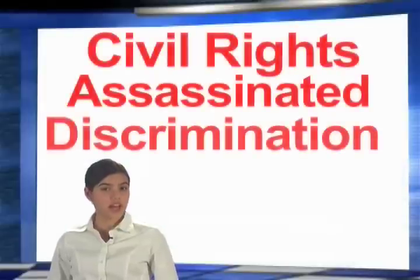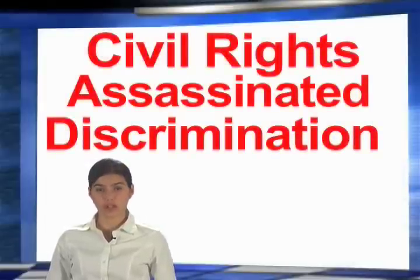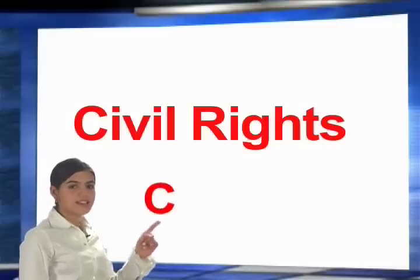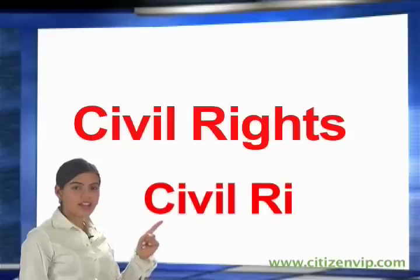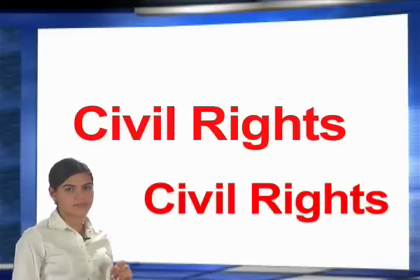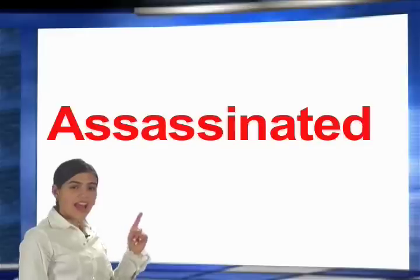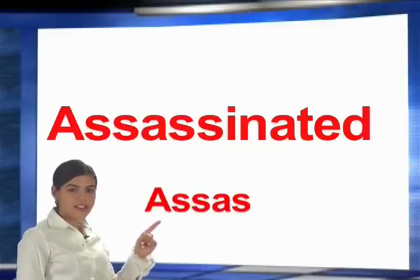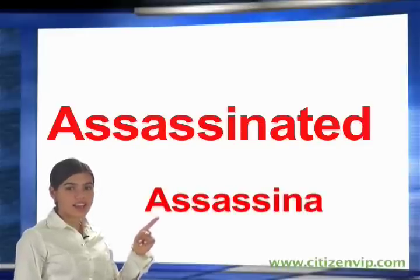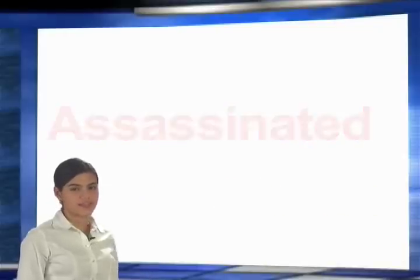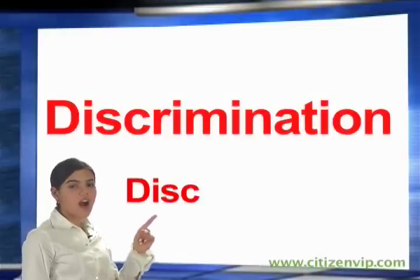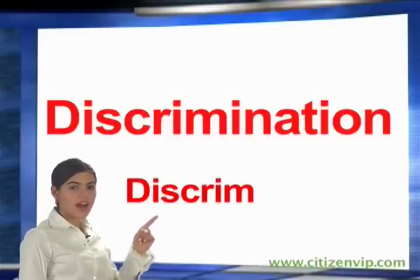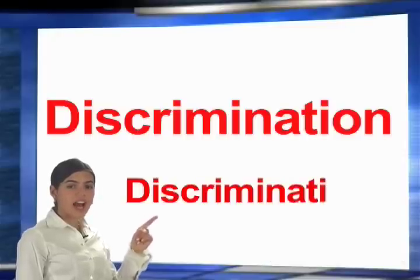Let's get familiar and learn how to spell the following words. Civil rights: C-I-V-I-L, Rights: R-I-G-H-T-S. Assassinated: A-S-S-A-S-S-I-N-A-T-E-D. Discrimination: D-I-S-C-R-I-M-I-N-A-T-I-O-N.